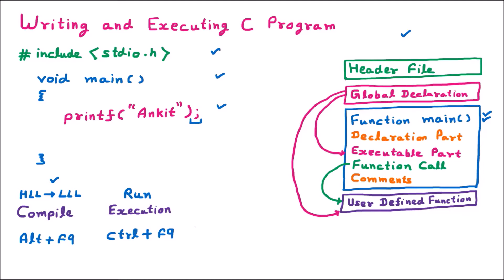Afterward, we have to see the output on the user screen. This is the next step which is the user screen. Here we have to press Alt plus F5. With Alt plus F5 we will get the user screen, and user screen means it is the output of our program. We can see what the output will be. Since we made this program, the output will be that the name Ankit will be displayed. This is how we can make the first C program.